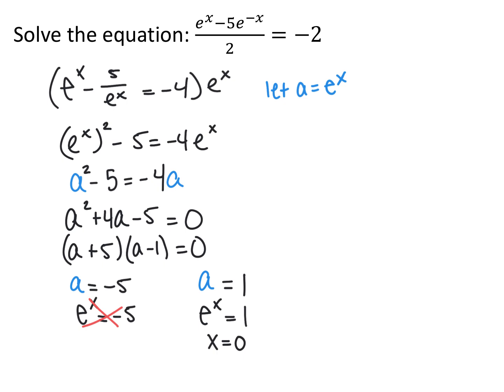For e to the x equals 1, x equals 0. The key idea is making the equation look like a quadratic. There's no way to get the same base on either side, and with multiple e to the x terms you can't isolate one exponent to switch into logarithmic form. Once you clear all denominators and notice it looks like a quadratic, treat it exactly like one. Just be careful: don't use the letter you're solving for as your substitution variable, and always substitute back at the end to solve for x.